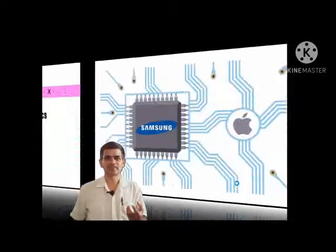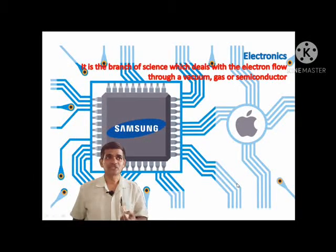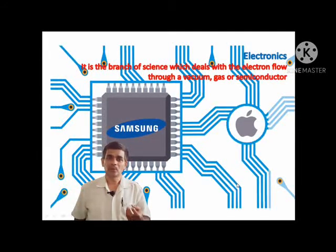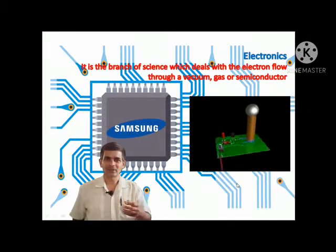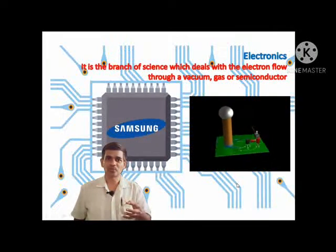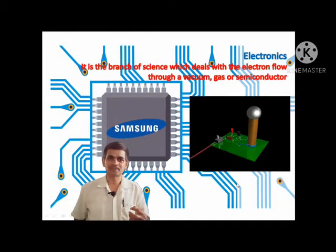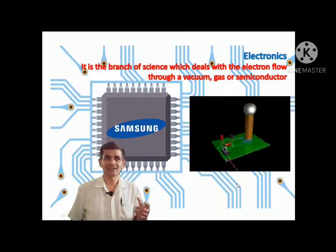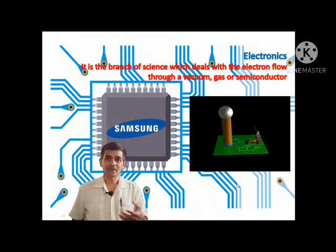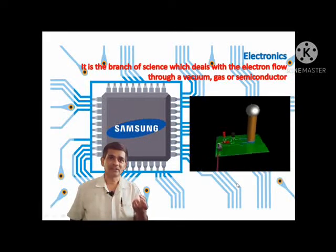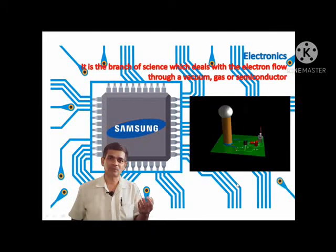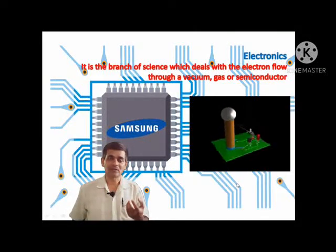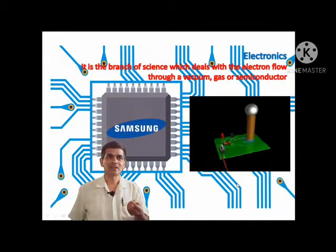Let us see first: what is electronics? Electronics is a branch of science which deals with electron flow over a vacuum, gas, or semiconductor — or you can say it is the controlled flow of electrons over a semiconductor. That particular branch is called electronics. You can observe in pictures an integrated circuit with a semiconductor chip where current is passing through a semiconductor. These particular devices are called semiconductor devices or electronic devices.